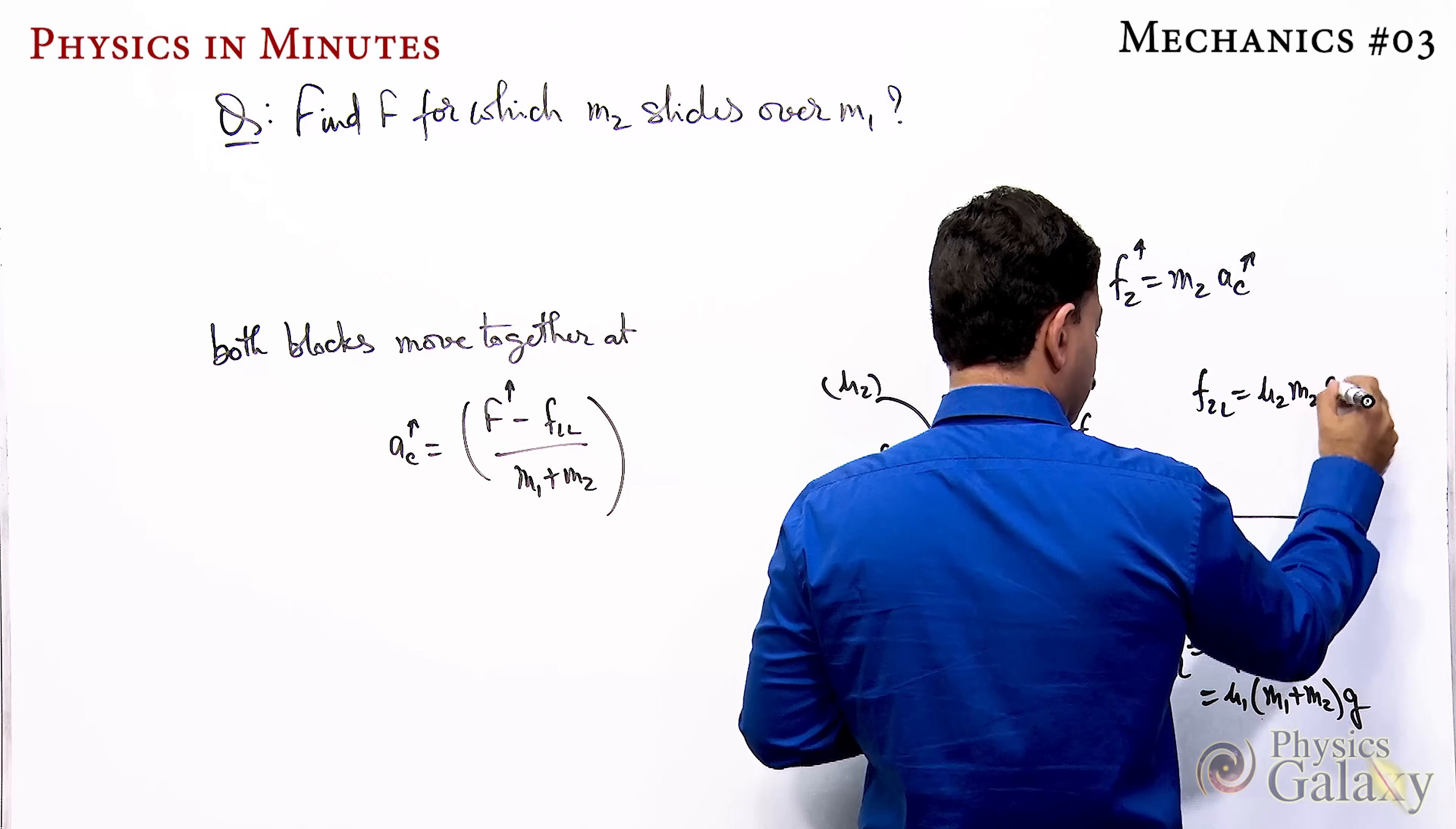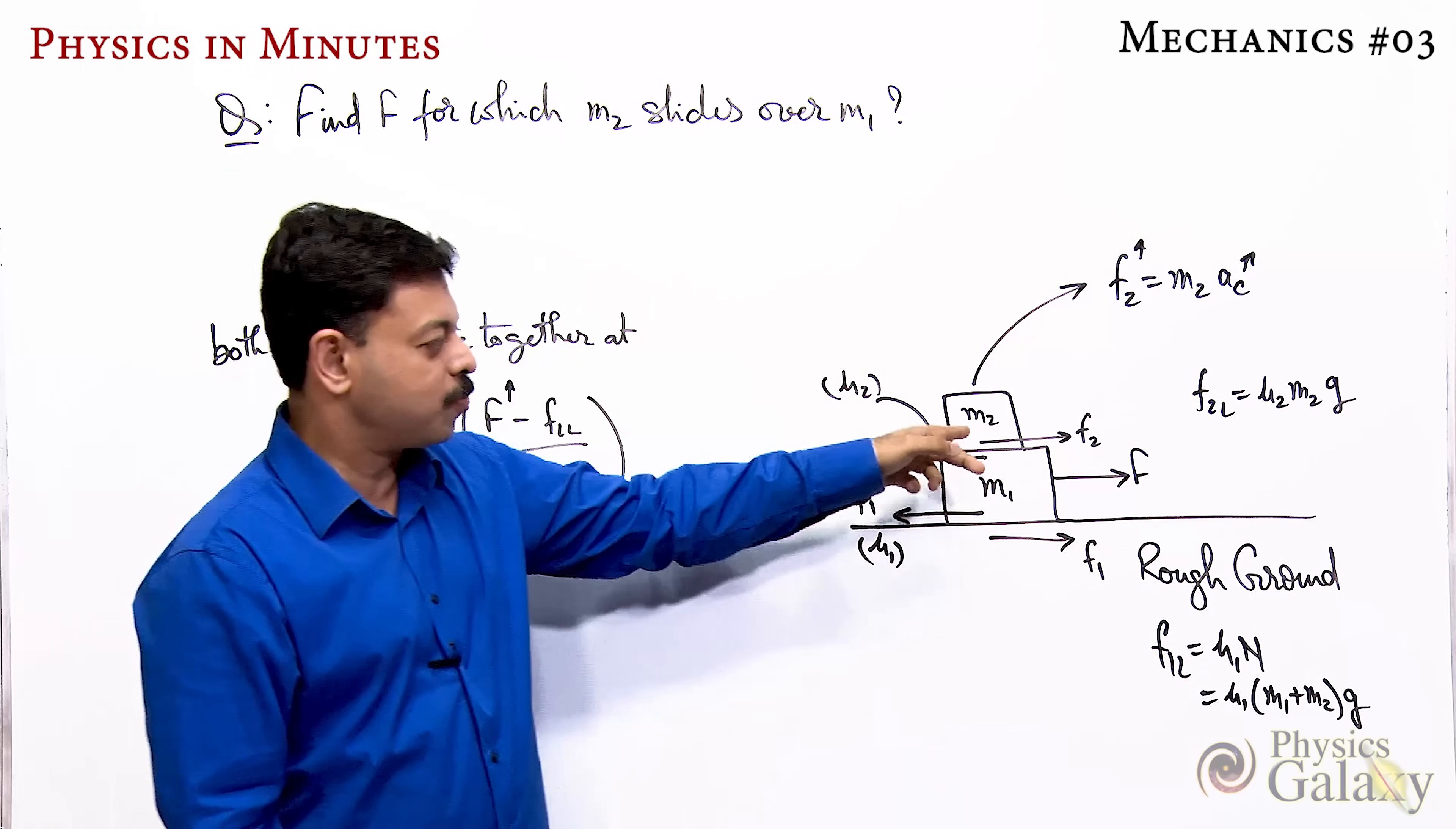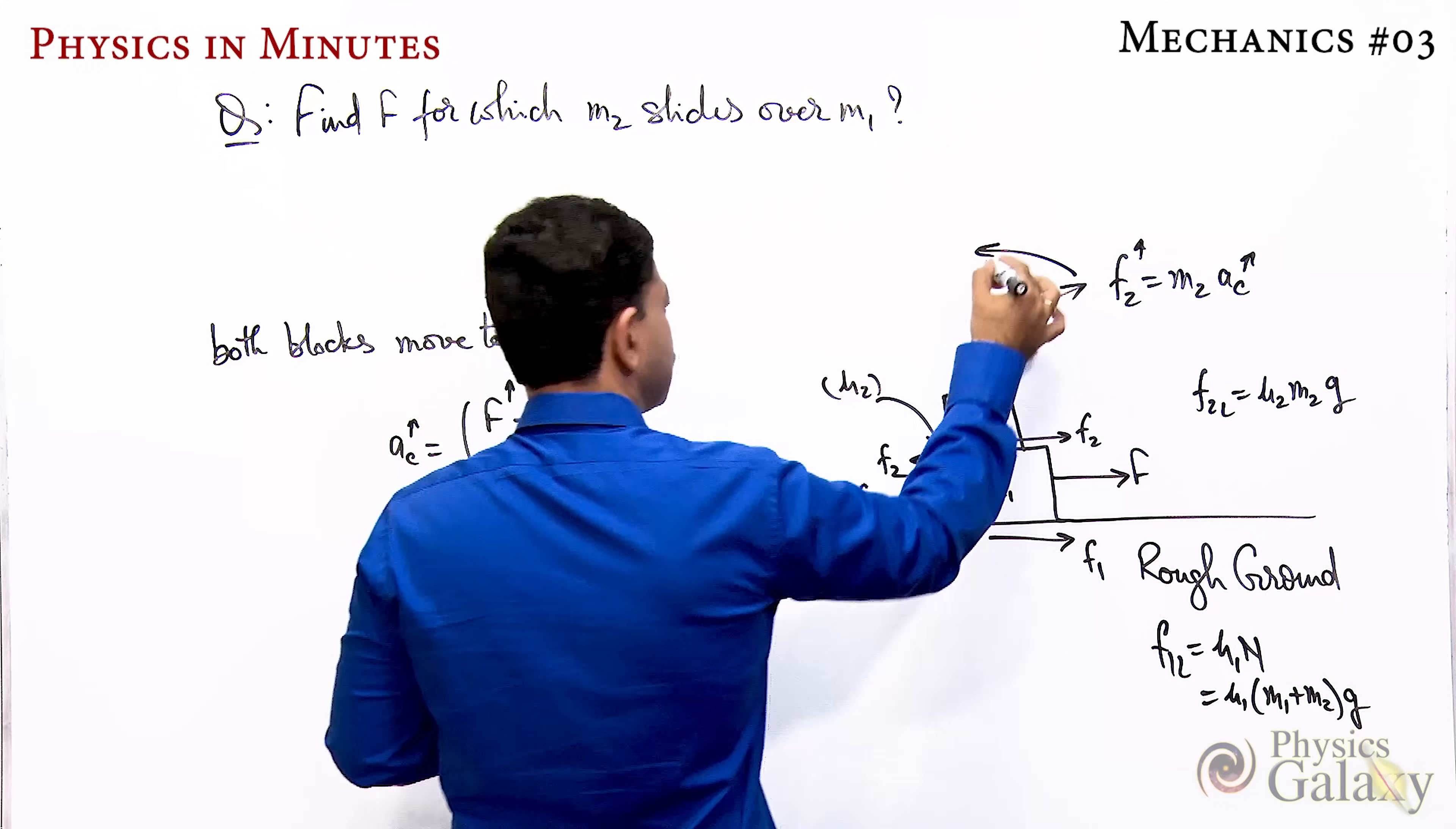That means if the question asks for the value of capital F at which m2 slides on m1, m2 will slide on m1 when the friction here reaches limiting value. So directly you can get the result from this equation.